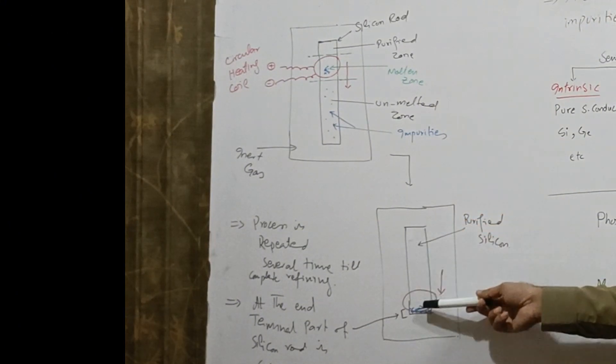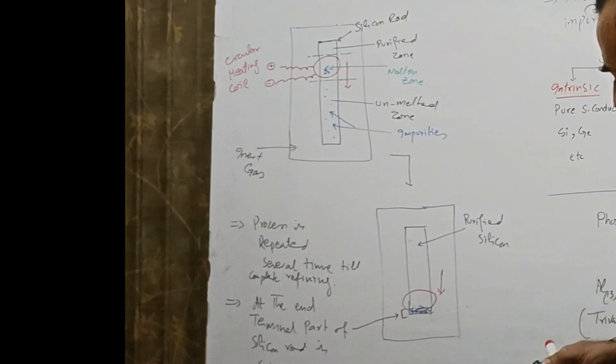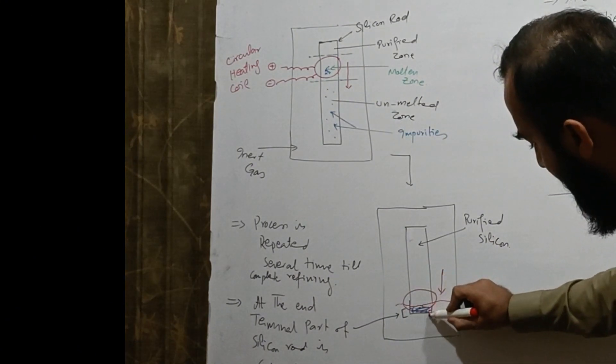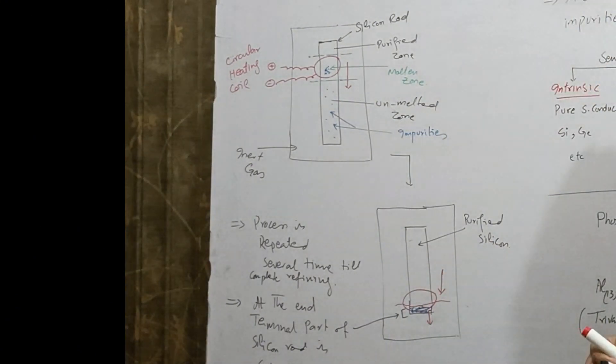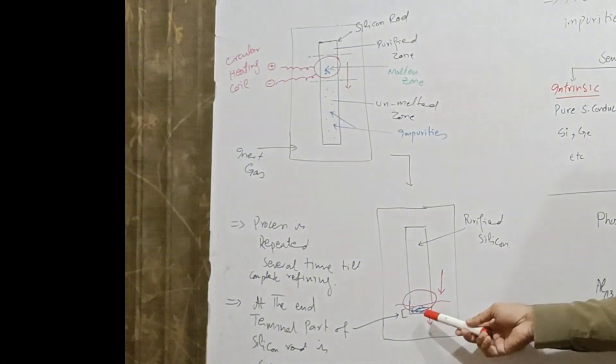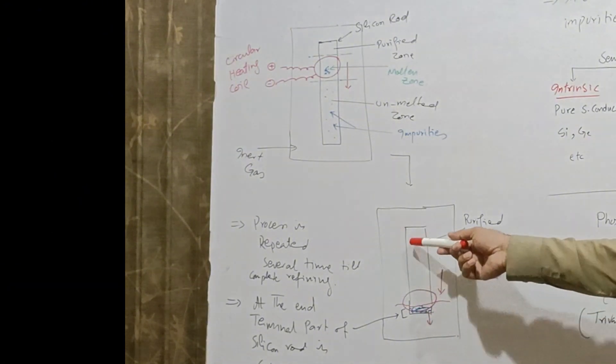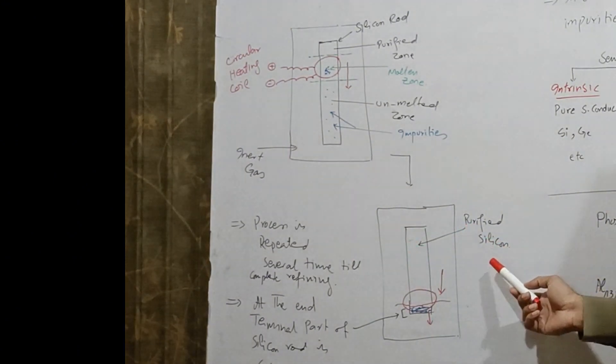When this process is completed, then the last part of the silicon rod is cut and we can remove all the collected impurities, and the rest of the silicon is called purified silicon.